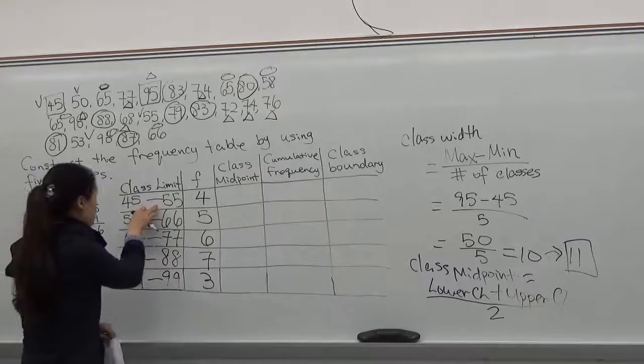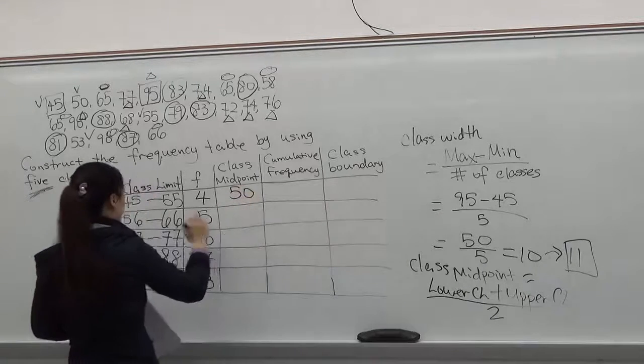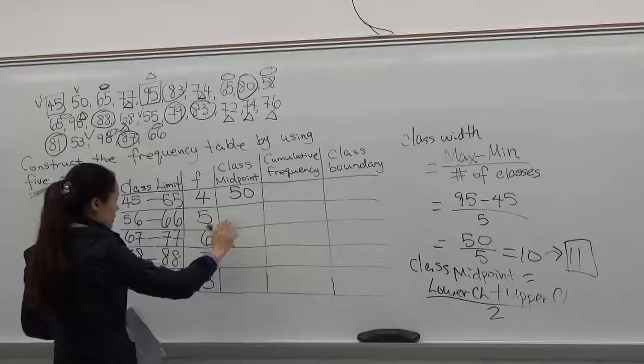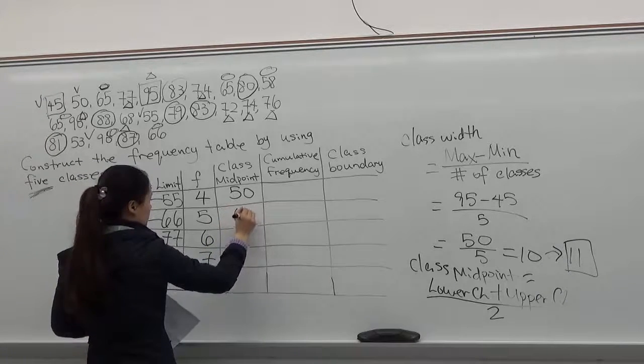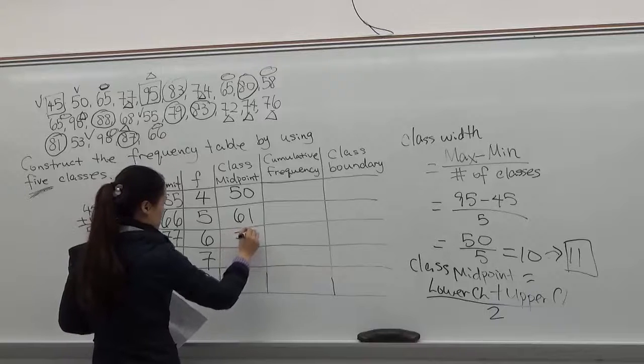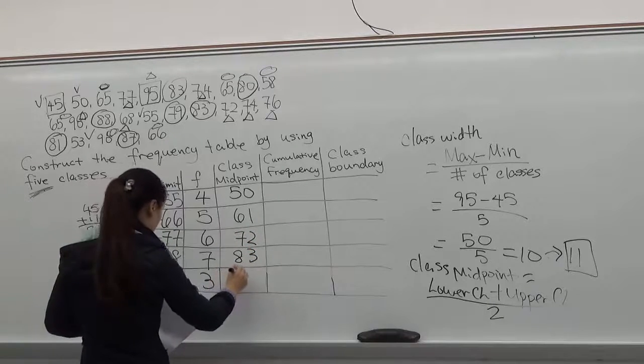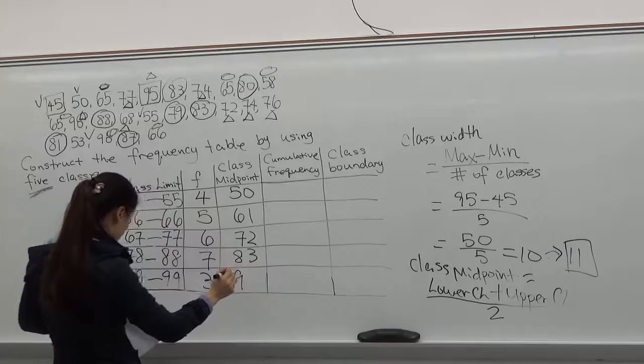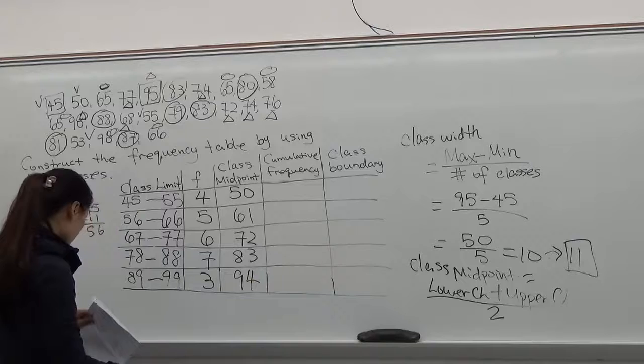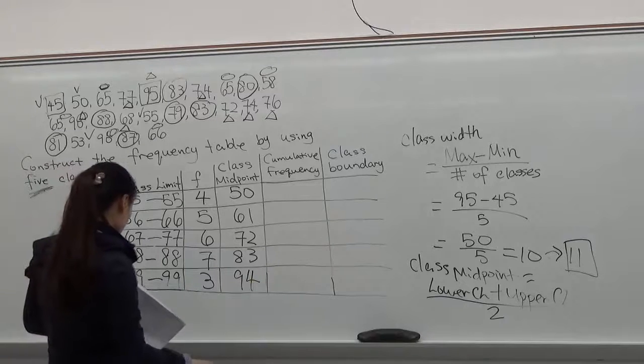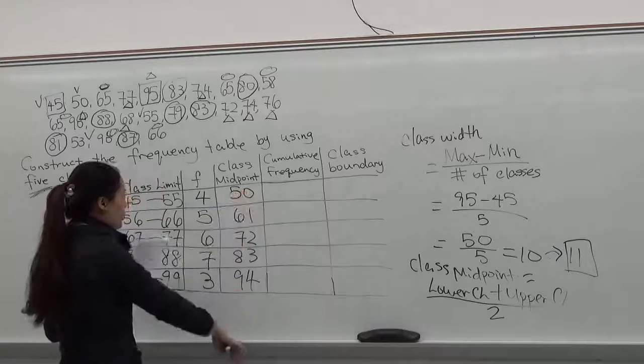45 plus 55 divided by 2, that's 50, and do the same for each of the class. 61. Okay. And 90, 4. That's all for class midpoint.